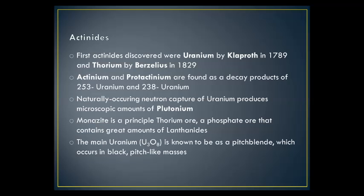The first actinides to be discovered were uranium by Klaproth in 1789 and thorium by Berzelius in 1829, but most of the actinides were man-made products of the 20th century. Actinium and protactinium are found in small portions in nature as decay products of ²³³U and ²³⁸U. Microscopic amounts of plutonium are made by neutron capture by uranium and yet occur naturally. Monazite is the principal thorium ore — a phosphate ore that contains large amounts of lanthanides. The main uranium ore is U₃O₈, known as pitchblende, because it occurs in black, pitch-like masses.